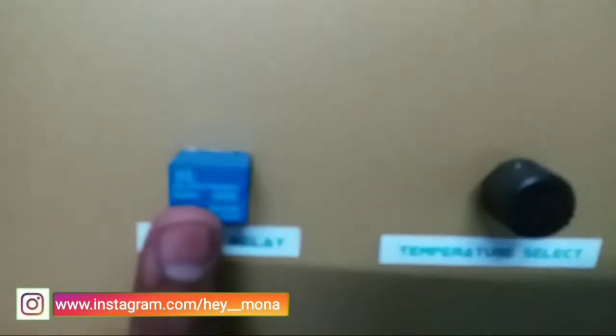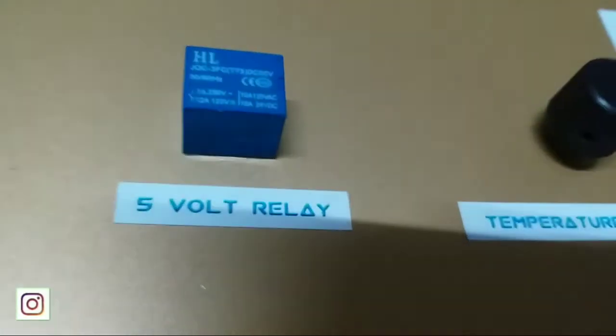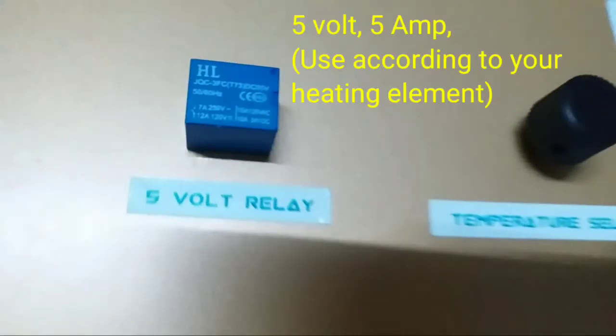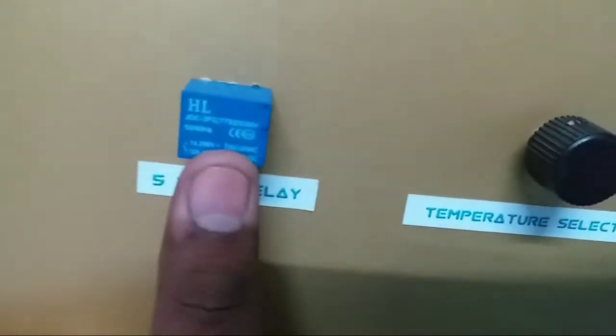This blue cube on the screen is 5V relay. It is used to turn on and off the heater. The current value of relay must be greater than the load current.